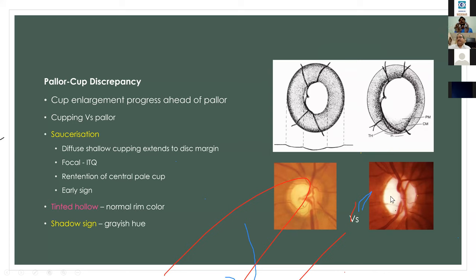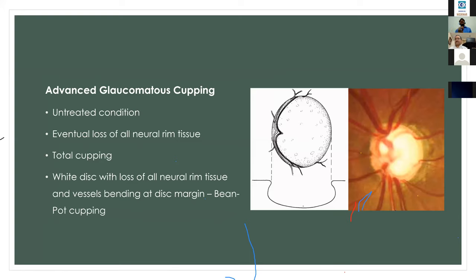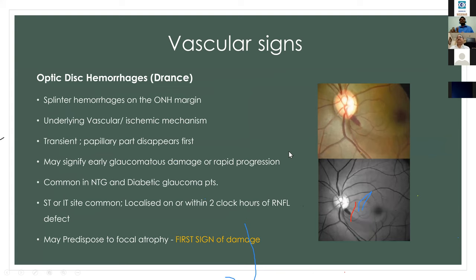Determining the margin of the cup should not be based solely on color, because optic photography can also give a false impression of findings. In advanced glaucomatous cupping, there is near-total loss of axonal fibers, leading to severe thinning of the neural retinal rim in all quadrants — total cupping, also called beanpot cupping. In these very deep cups, the laminar dots or laminar fenestrae are very clearly visible.